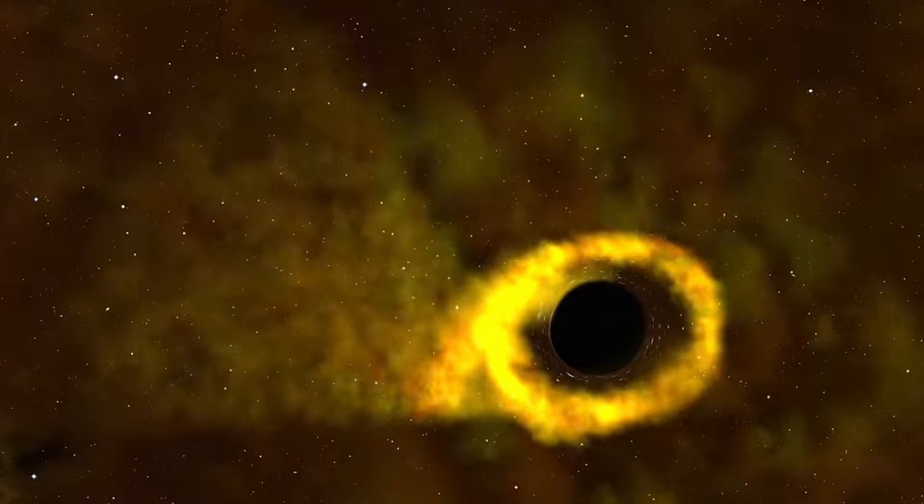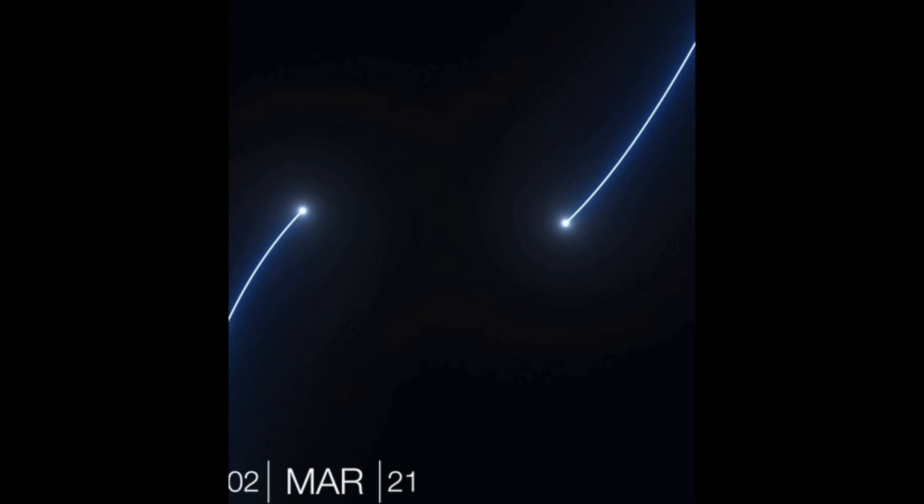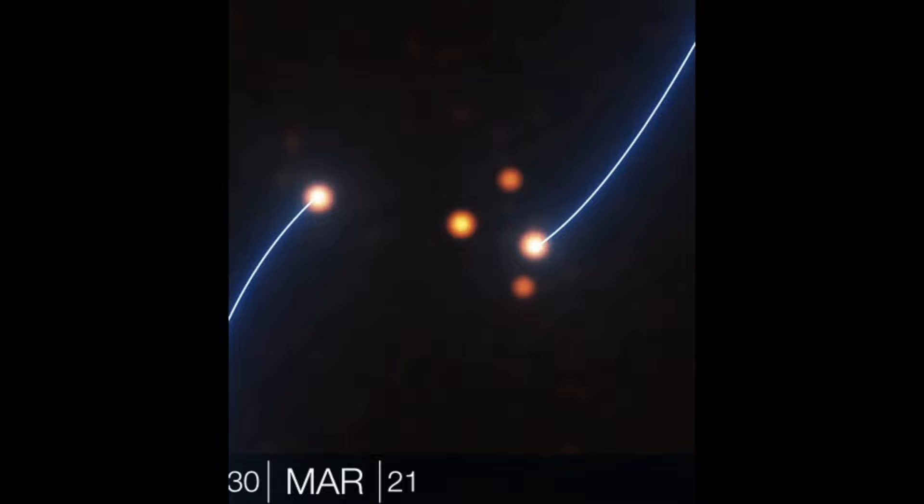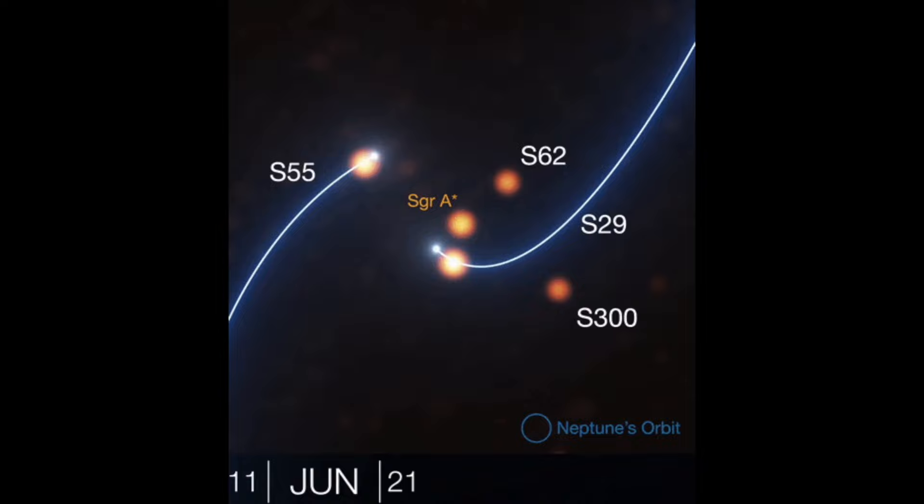On October 31, 2018, a paper unveiled conclusive evidence that Sagittarius A-star is, indeed, a black hole. Using the gravity interferometer and the very large telescopes, astronomers formed a virtual telescope spanning 130 meters, or 430 feet, in diameter.